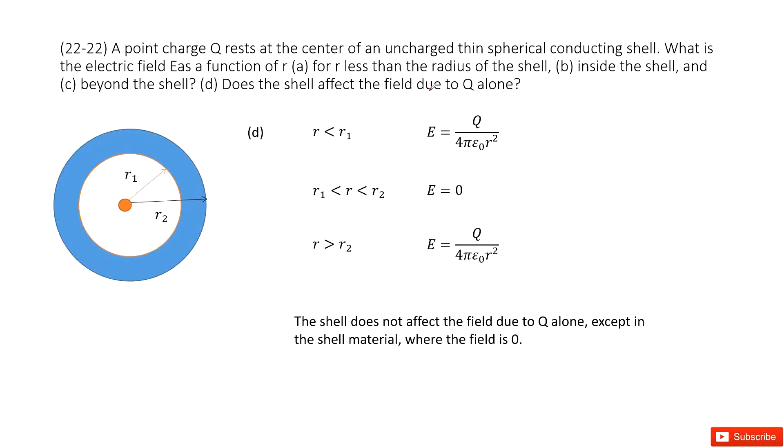The next one asks you, does the shell affect the field due to Q alone? So we can write down our previous answers. For A, if R is smaller than R1, we get the electric field look like this one. If R is larger than R1, smaller than R2, E equal to 0. If R is larger than R2, so E equal to this function. You can compare. This function is exactly the same. So it looks like this conducting shell will not affect the electric field due to Q alone. But just inside this conducting shell, E becomes 0.